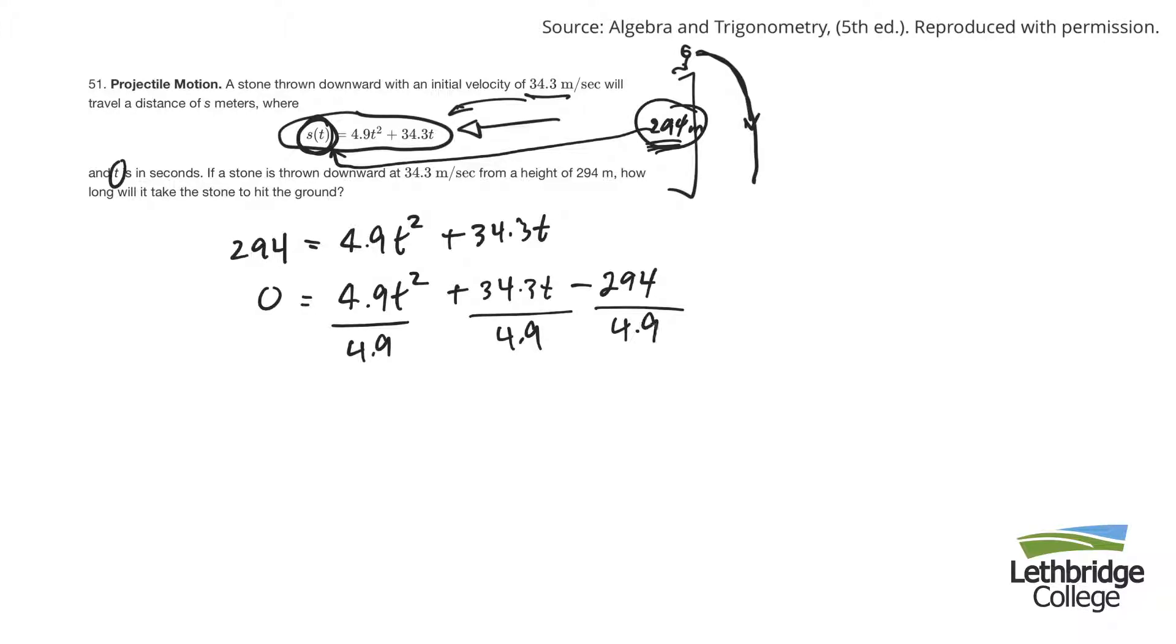I'm going to divide this and this and this all by 4.9 and see if it comes out even, hopefully. So 4.9 divided by 4.9 would just be T squared plus, 34.3 divided by 4.9, it comes out to 7. Minus 294 divided by 4.9, that's 60.